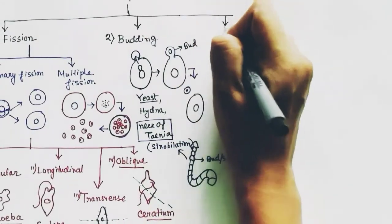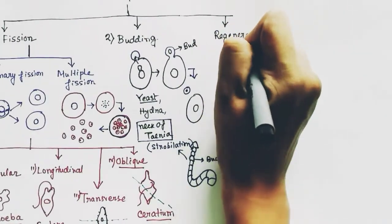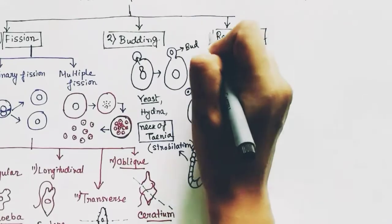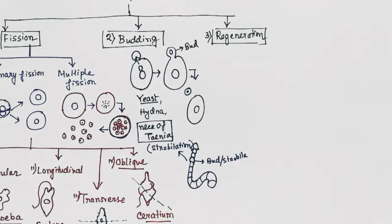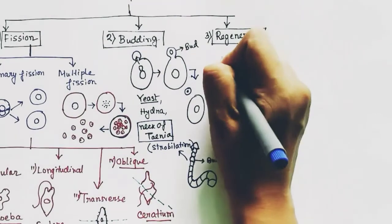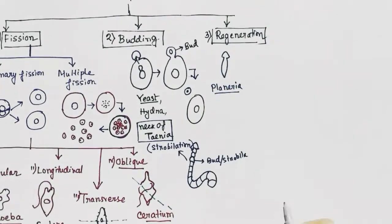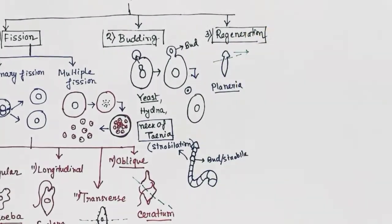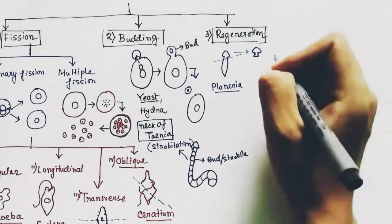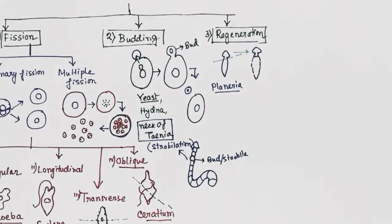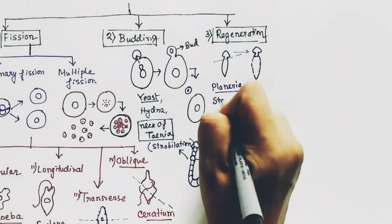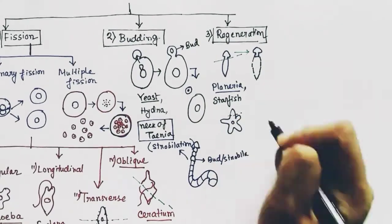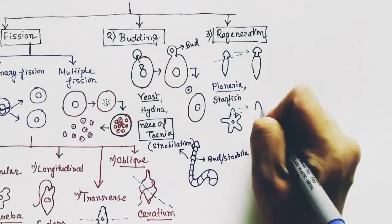The third type of asexual reproduction is regeneration. It is found in different organisms — for example, in Planaria. When a part of that organism is fragmented by chance, this part can grow into the whole organism. It can also be seen in starfishes: when a leg part of a starfish is fragmented, that part can form the whole starfish.